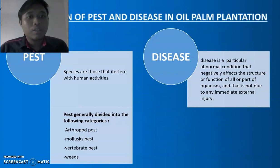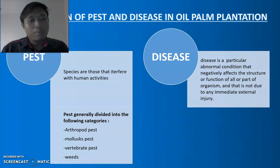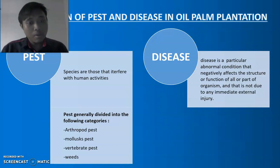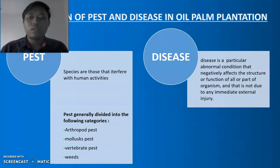The introduction of pests and disease in oil palm plantation. Pests are species that interfere with human activities, and pests are generally divided into the following categories: arthropod pests, molluscs pests, vertebrate pests, and weeds. Disease is a particular abnormal condition that negatively affects the structure or function of all or part of an organism, and that is not due to any immediate external injury.